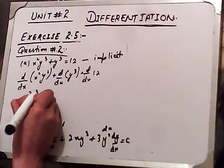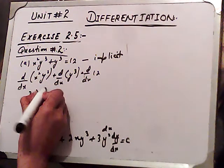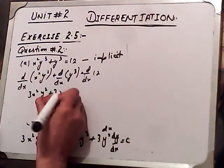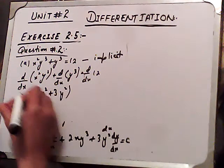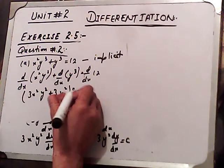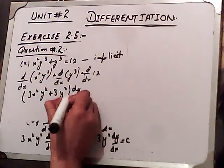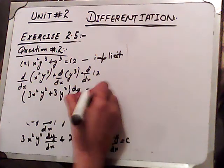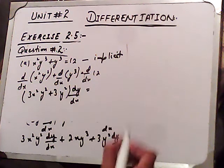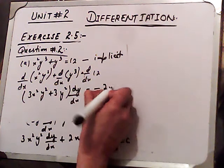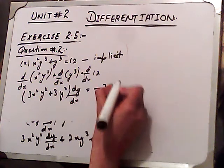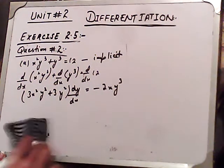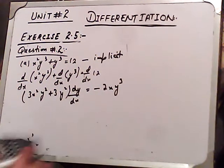We have 3x squared y squared plus 3y squared, with dy/dx as common. The remaining terms give us minus 2xy cubed. So dy/dx times (3x squared y squared plus 3y squared) is equal to minus 2xy cubed.